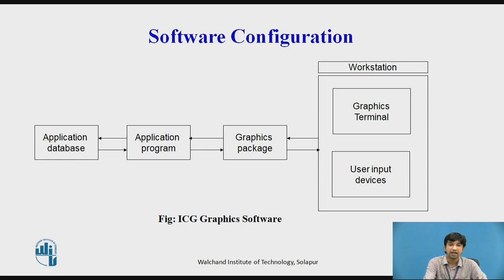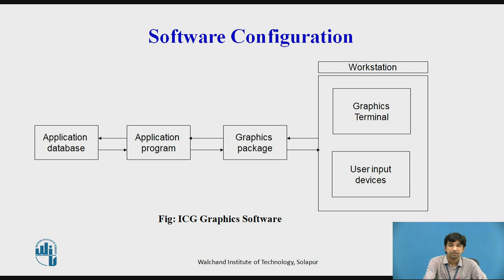The graphics package provides graphical interaction between the user and the system. It works as an intermediate between the graphic software and the user, and consists of input sub-routines and output sub-routines. Input sub-routines accept input commands from the user and submit them to the application program. Output sub-routines control the display terminal, converting the physical or application model into 2D or 3D computer pictures.